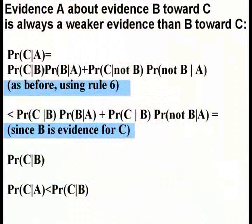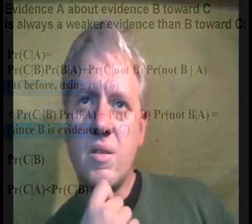The proof for this is here and it's not as difficult as the last one, but you'll have to stop and look at the slide if you want to soak it up. The stronger the evidence A is for B, the less this difference will be. The weaker the evidence for B given A, the less A will affect the probability for C too. And you will of course not be convinced that C is the case unless B is strong evidence for C also.